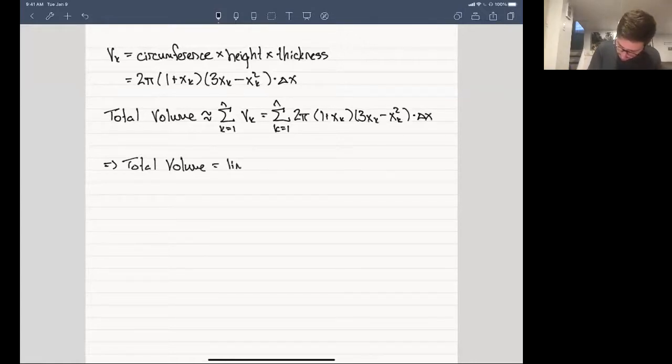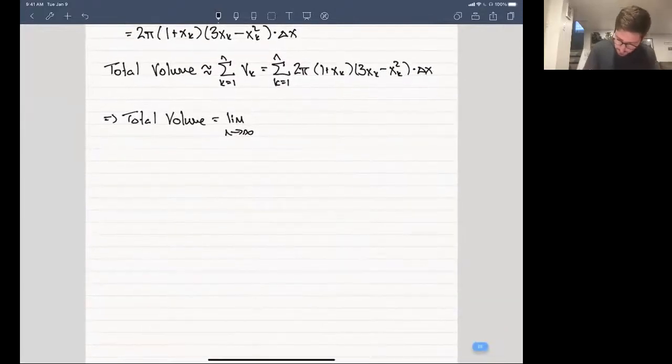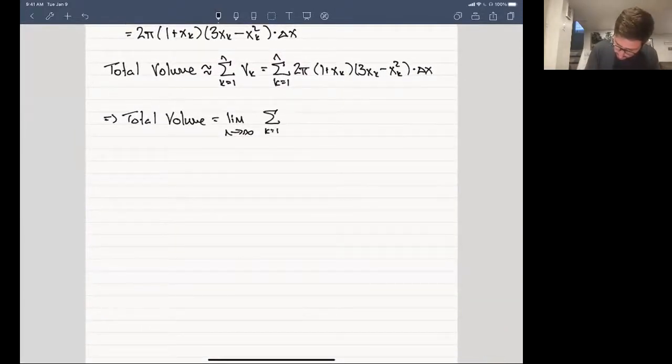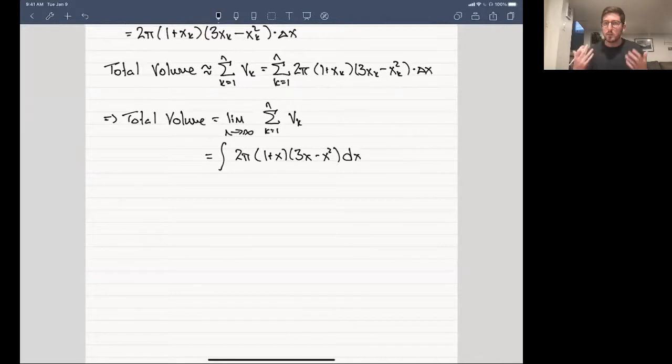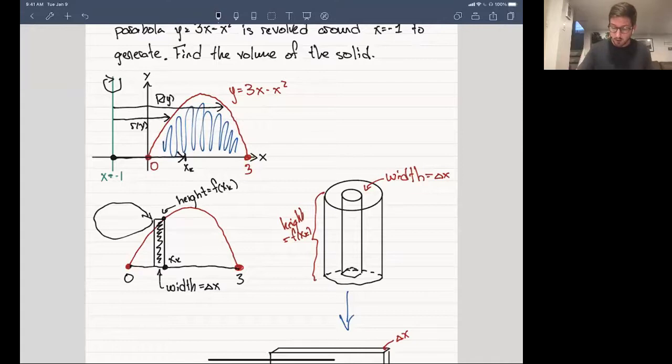We can say that the total volume is equal to the limit as n goes to infinity, the limit of these Riemann sums, which gives us a definite integral, so we get 2 pi times (1 plus x) times (3x minus x squared) dx. And the question is, what are the bounds on this thing? Well, let's go back for a second. We were taking this Riemann sum approach here. We are looking for essentially the area underneath the curve, and the curve is running from x equal to 0 all the way up to x equal to 3. So this gives us the bounds on our definite integral.